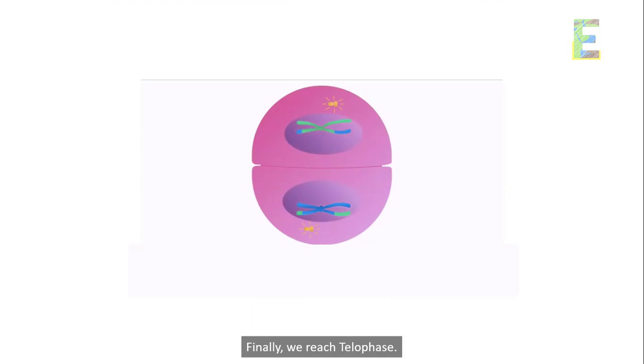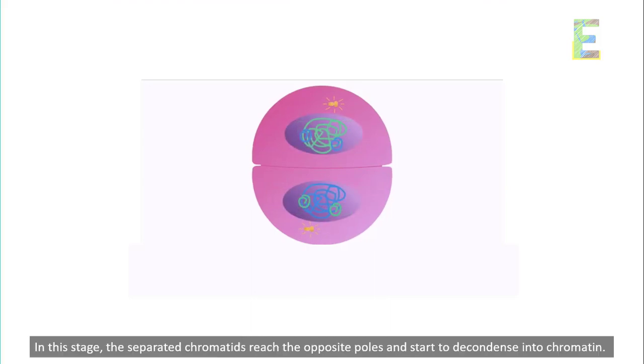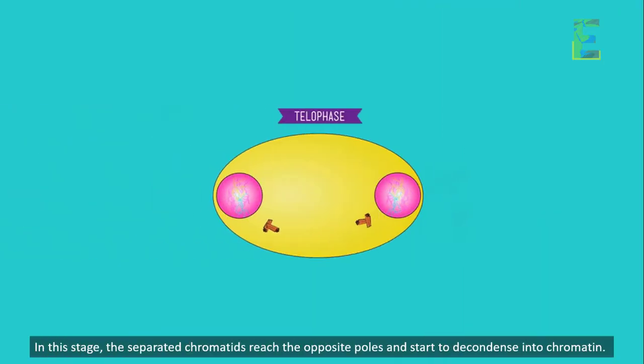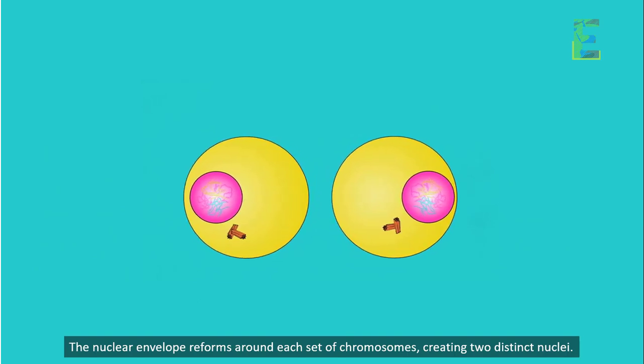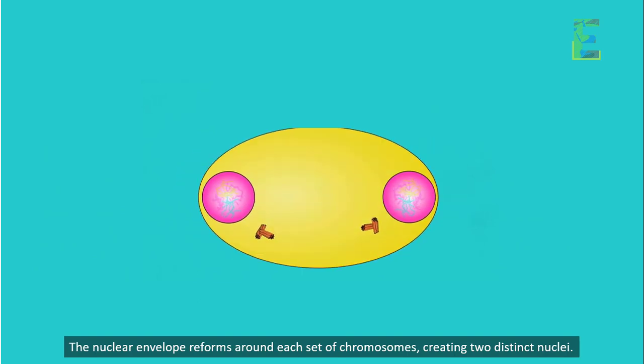Telophase. Finally, we reach telophase. In this stage, the separated chromatids reach the opposite poles and start to decondense into chromatin. The nuclear envelope reforms around each set of chromosomes, creating two distinct nuclei.